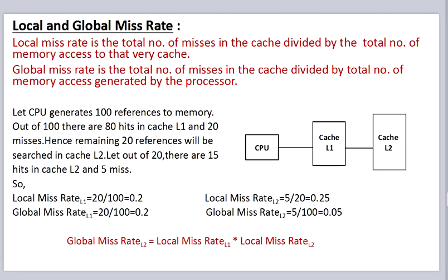Suppose the CPU generates 100 memory references. Out of 100, there are 80 hits in cache L1 and 20 misses, so the remaining 20 references will be searched in cache L2. Out of 20, there are 15 hits in L2 and 5 misses. For L1 cache, local miss rate is 20/100 = 0.2, and global miss rate is also 20/100 = 0.2. For L2 cache, local miss rate is 5/20 = 0.25, and global miss rate is 5/100 = 0.05.